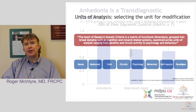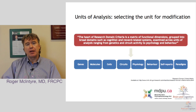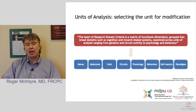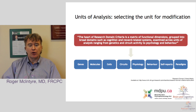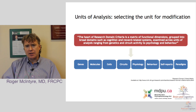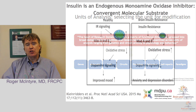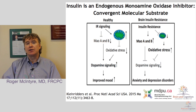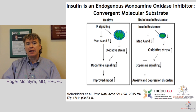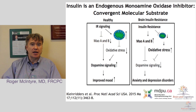We are beginning to learn that the relationship between impairment in glucose-insulin homeostasis and cognition and anhedonia can be understood across several levels, or so-called units of analysis. What I'm going to do is focus on a couple of these units, beginning with the molecular unit. We have reasons to believe that insulin is a monoamine oxidase inhibitor.